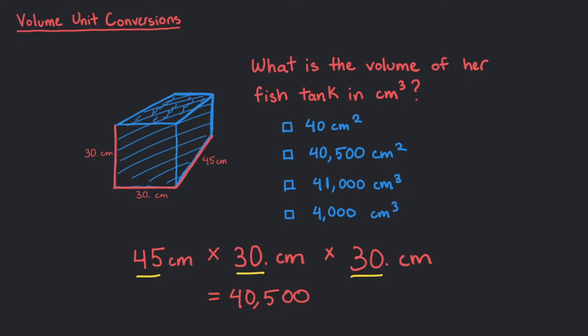Because the measurements all have two significant figures, that means the 40,500 will be 41,000, rounded to two significant figures. The 4 and 1 are significant, but the three trailing zeros are not. Significant figures will be a topic of a later video.